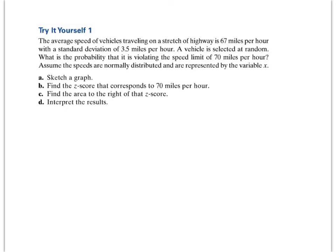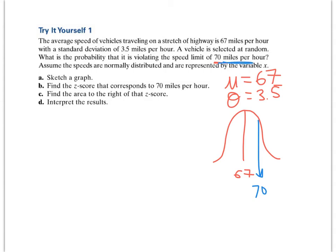Alright let's try it again. The average speed of vehicles traveling on a stretch of highway is 67 miles per hour. Average means that the μ is going to be 67. With a standard deviation, so our standard deviation is 3.5 miles. A vehicle is selected at random. What is the probability that it is violating a speed limit of 70 miles per hour? So if we draw this out we know that 67 is here because it's the mean. They want to know when the person is doing 70 and they're violating the speed limit, so it'd be 70 or more. So we need to figure out the z-score for this value right here and then subtract it from 1.